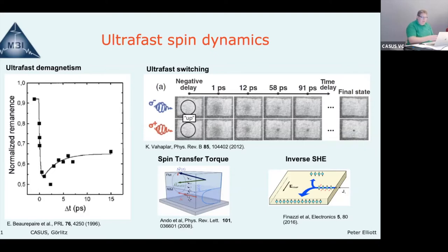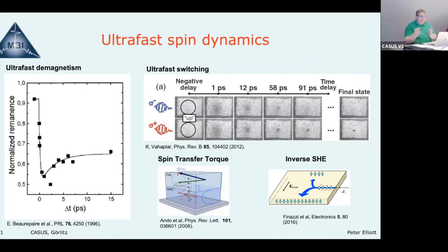The spin dynamics part comes because spintronics is a big field right now. It's more efficient to work with spin — many processes involve going from spin to charge and back again, wasting a lot of energy. You can also have spin currents that flow without some of the dissipation you get in charge currents, so they're seen as the next step.